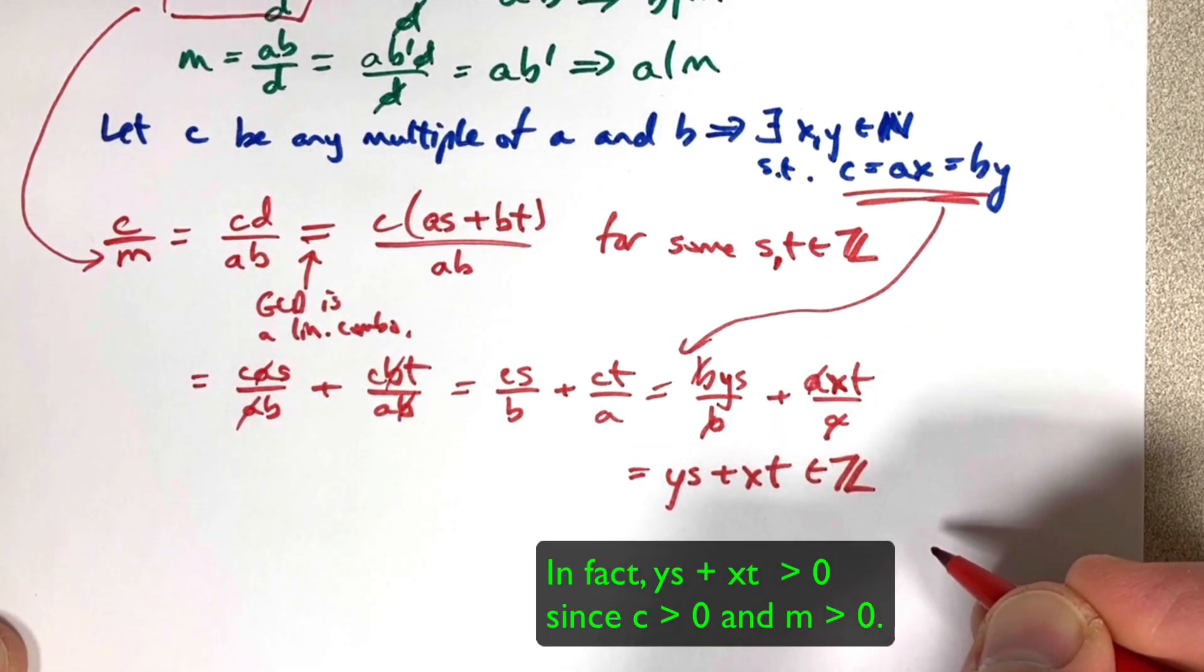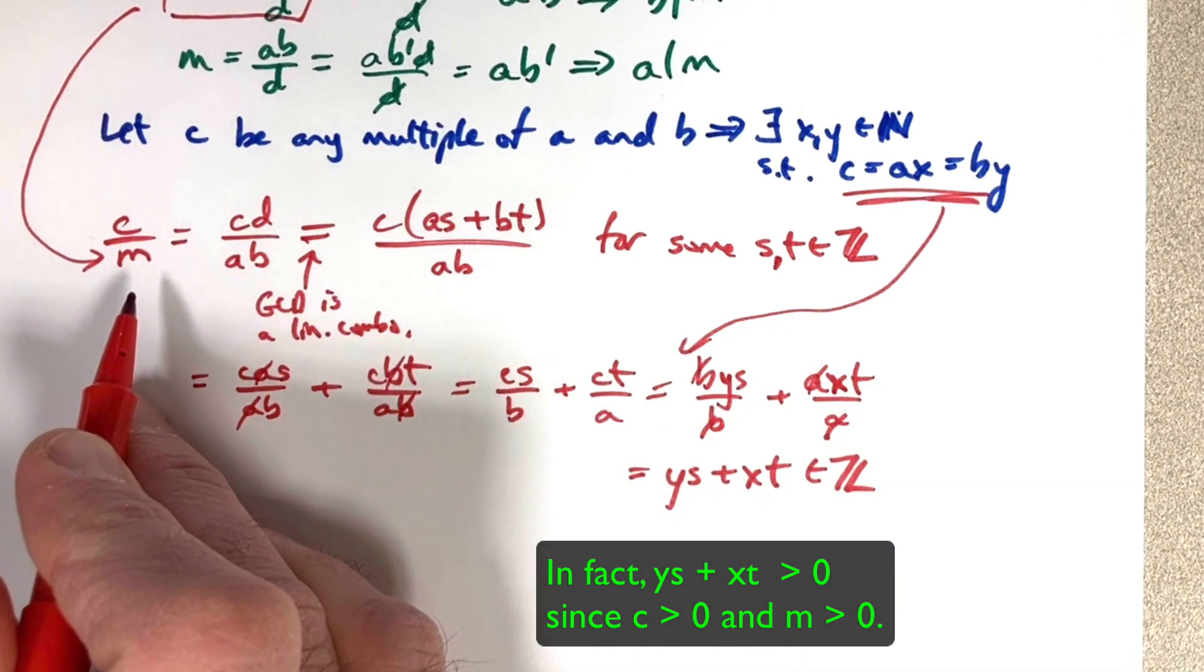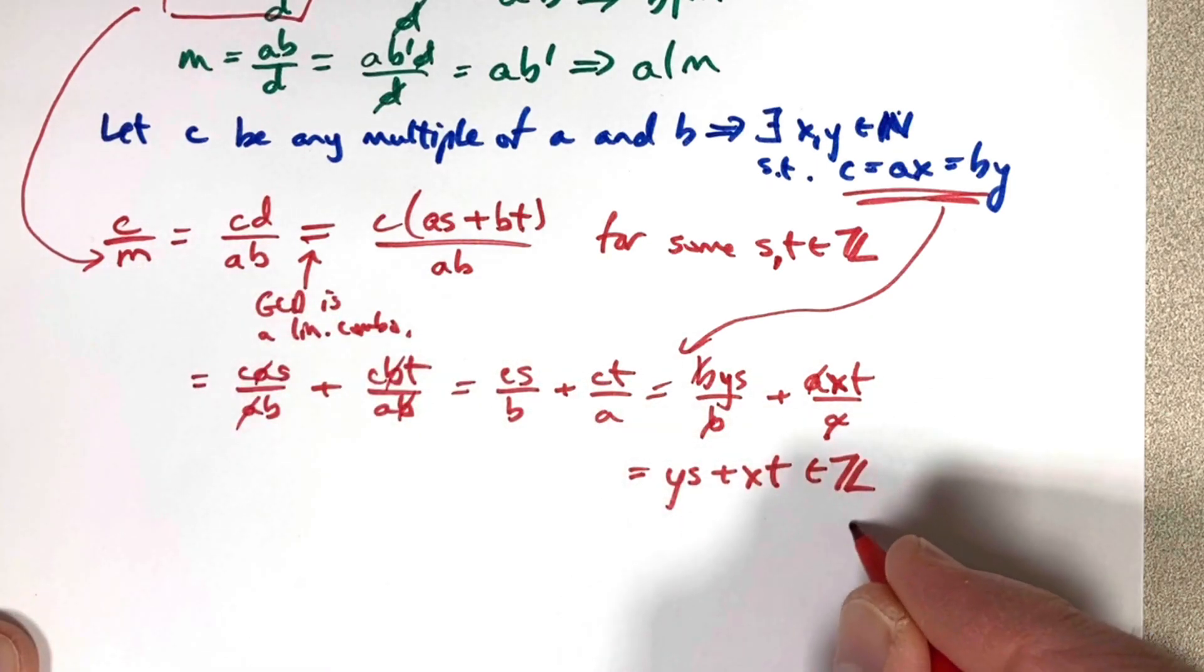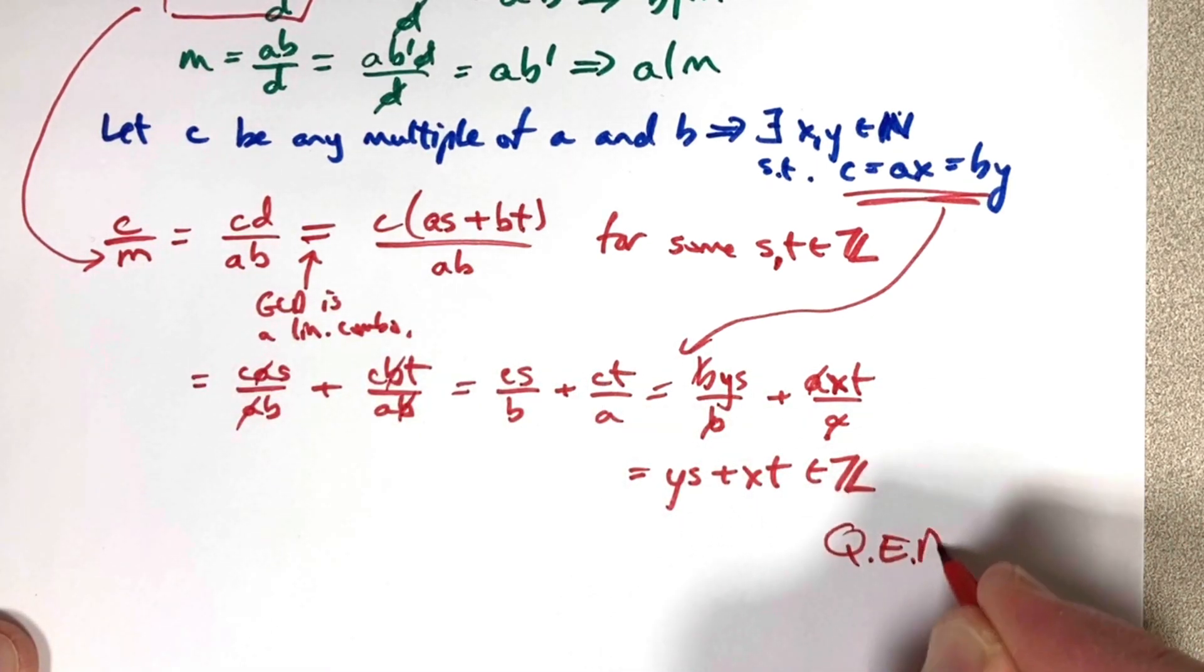In fact, it would have to be a natural number, but I'll just go ahead and say an integer. And that is enough to say C over M is an integer. C is bigger than or equal to M. In other words, M is the least common multiple of A and B. We are done. QED. Thanks for watching.